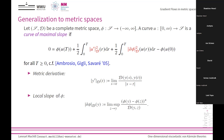Now I owe you the definitions. We get rid of the linear structure of the space and just use the metric and the energy to define the metric derivative. Similarly for the local slope, we divide by the metric. These are the natural generalizations of those quantities to the metric setting.